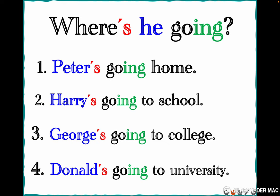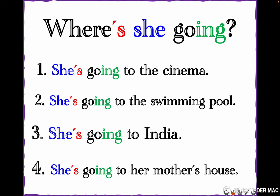Where's he going? — Now we answer with a person's name: Petter's going home, Harry's going to school, George's going to college, Donald's going to university. Let's repeat: 'Where's he going?' — Petter's going home, Harry's going to school, George is going to college, Donald's going to university.